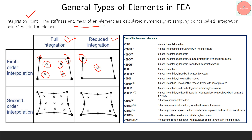Integration is divided into two categories: full integration and reduced integration. Full integration takes more time because it uses four integration points per element — the analysis captures results at all four. With reduced integration for first-order interpolation, there is only one integration point, taking much less time. For second-order interpolation, integration points are created at mid-side nodes as well as corner nodes, making it more time-consuming. The choice depends on the type of analysis and the order of interpolation.